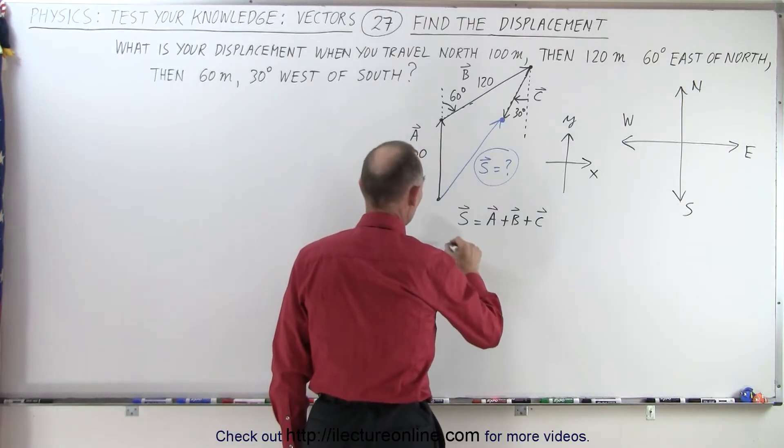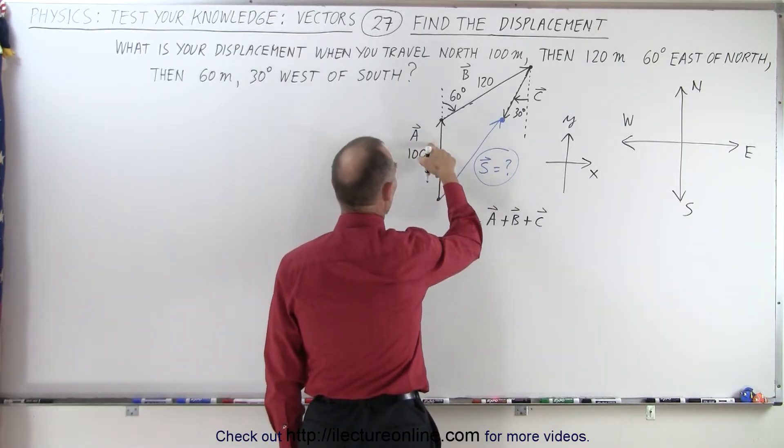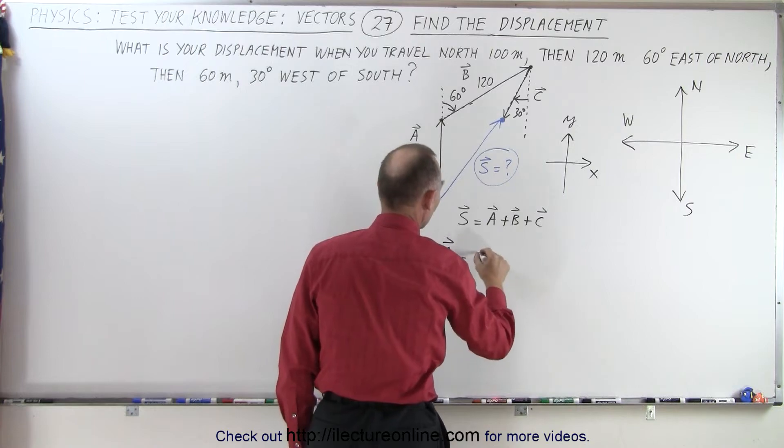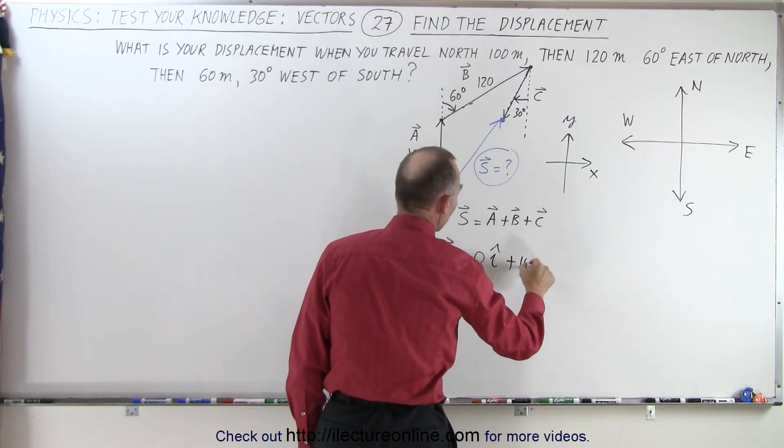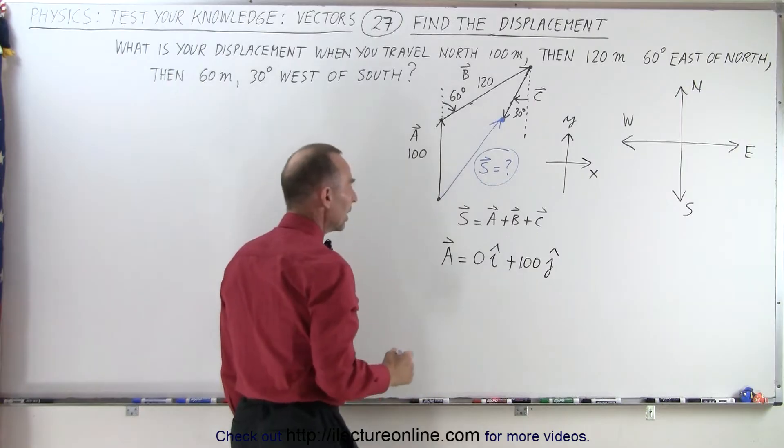So let's find the X and Y components of each of the three vectors. In the case of vector A, notice there's no X component, but there is a Y component. So, this is equal to 0 in the I direction, plus 100 in the J direction.